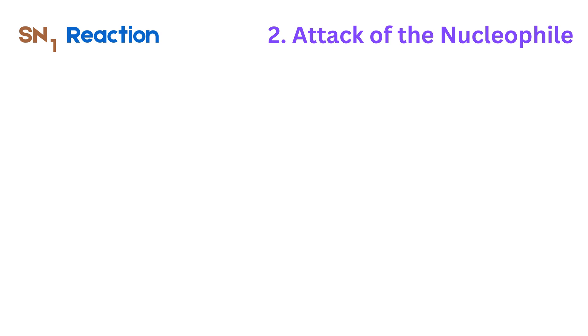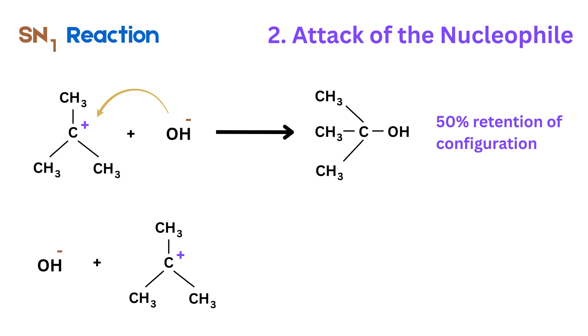Step two is the attack of the nucleophile. Now the nucleophile, like OH-, can attack the carbocation from either side, left or right, because the planar structure gives equal access from both sides. If it attacks from the same side, we say 50 percent retention of configuration.